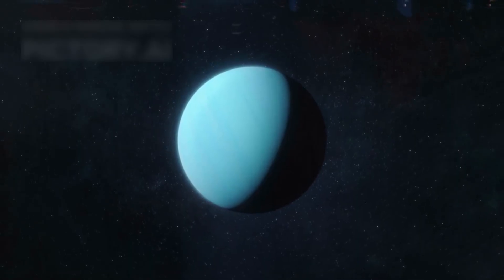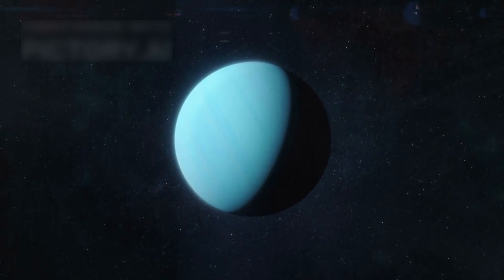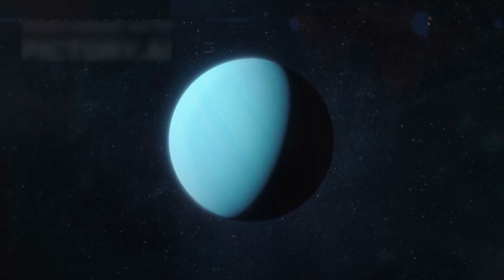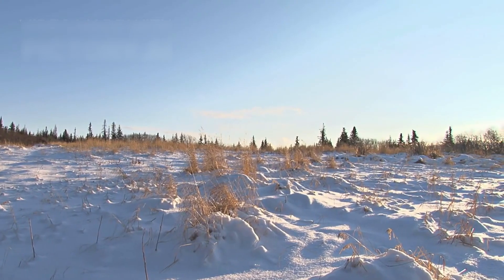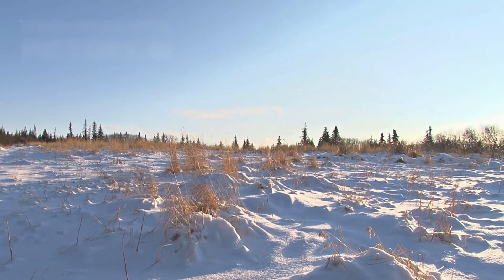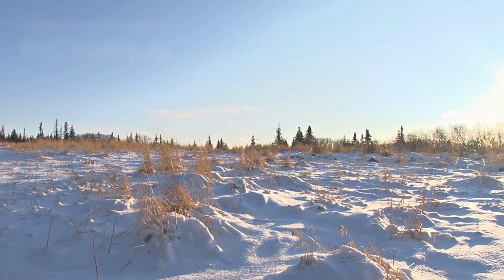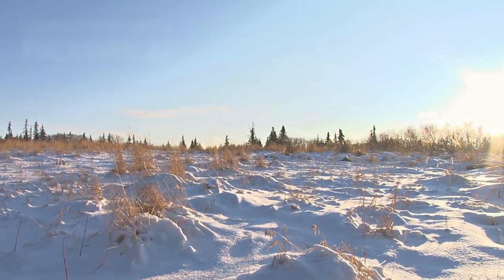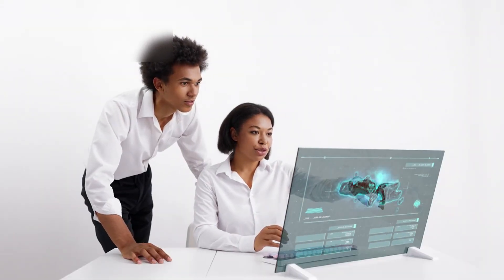Voyager 2 ventured further, becoming the only spacecraft to visit Uranus and Neptune. It unveiled ice geysers on Triton, magnetic fields on Uranus, and Neptune's violent weather systems. These discoveries shattered assumptions.